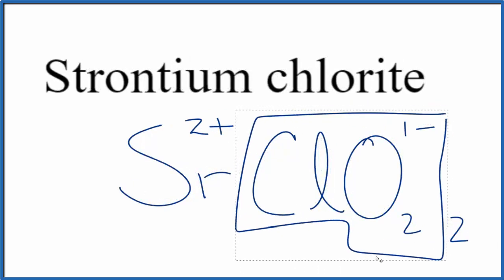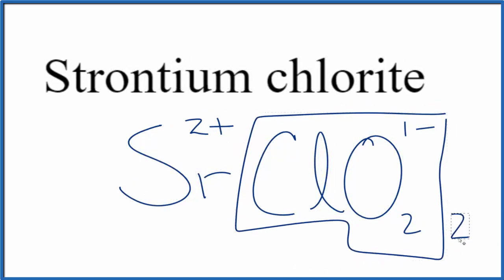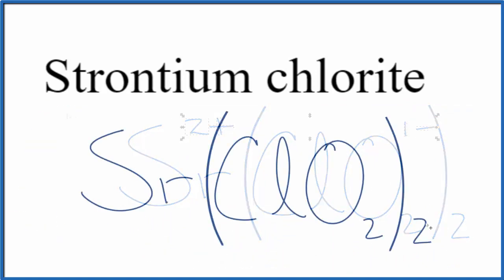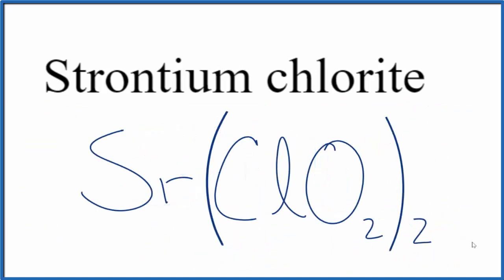We would need to replace this here with parentheses since we have 2 Chlorite ions. Get rid of these charges. And this is the formula for Strontium Chlorite, Sr(ClO2)2. This is Dr. B, and thanks for watching.